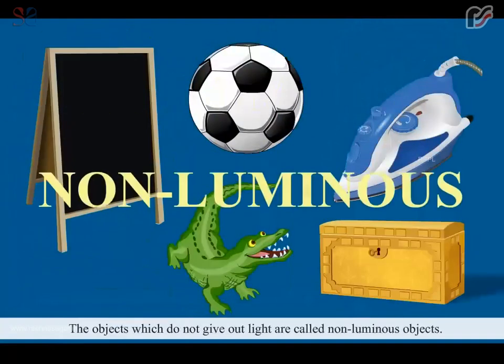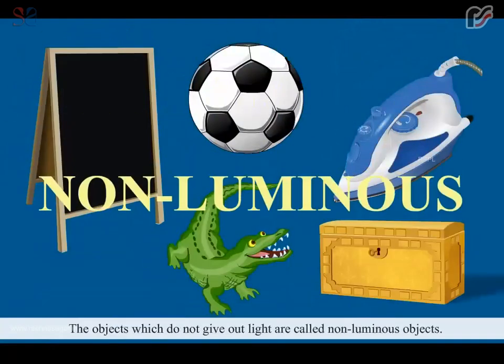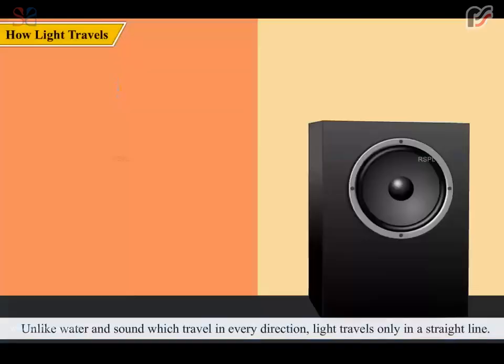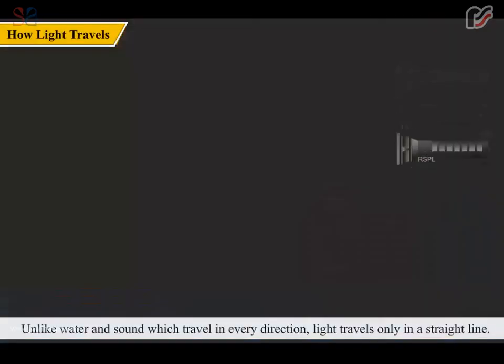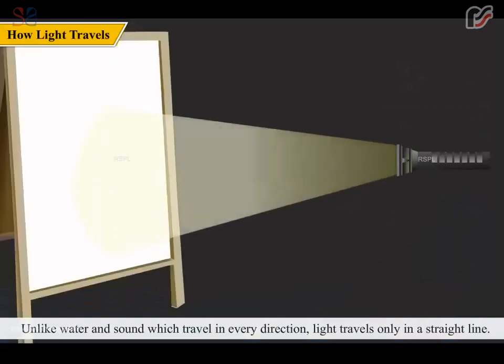The objects which do not give out light are called non-luminous objects. Unlike water and sound, which travel in every direction, light travels only in a straight line.